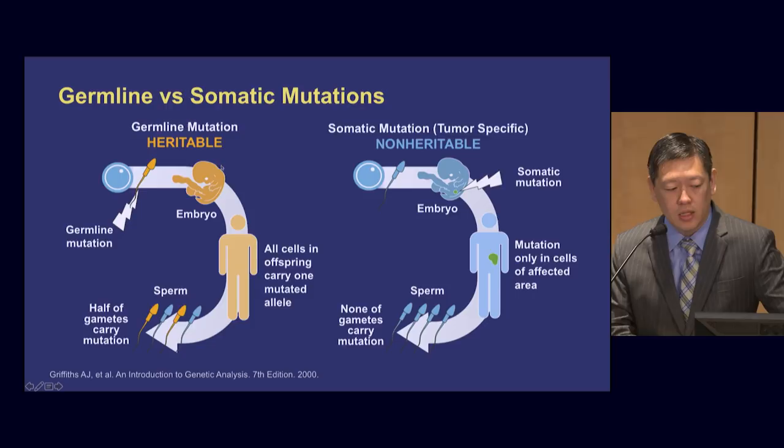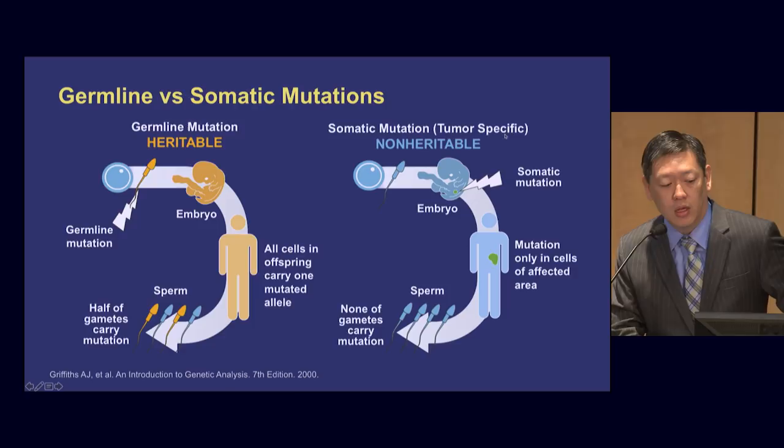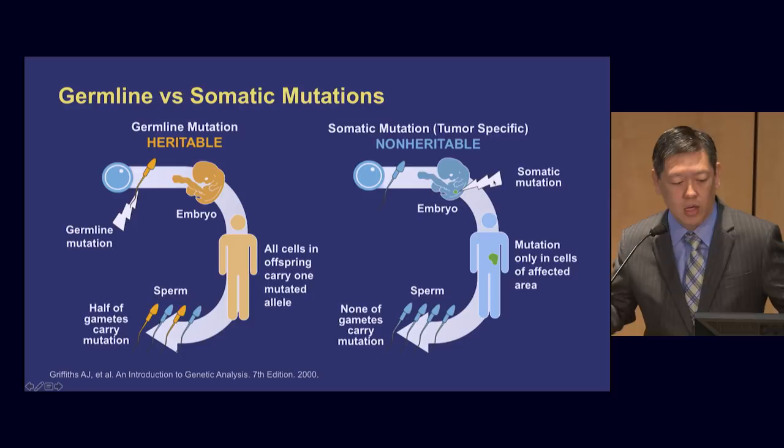You can also have somatic mutations, which are non-hereditable and are tumor specific. These are mutations that occur later after an embryo has formed and only affect some cells within the person, shown here in green. Because they don't affect the reproductive cells, the sperm are normal and nothing is passed on to the child. Germline — hereditable. Somatic — non-hereditable.